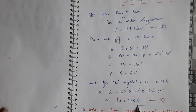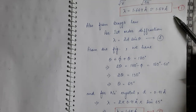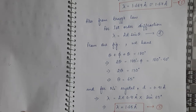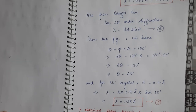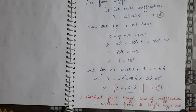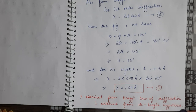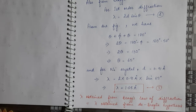From equation 1, lambda is 1.67 angstrom, and from equation 3 via Bragg's law it is 1.65 angstrom. Approximately both wavelengths are equal. This means the wavelength obtained from Bragg's law of diffraction and the wavelength obtained from de Broglie's hypothesis are equal. In this way, Davisson and Germer successfully proved the existence of de Broglie waves associated with material particles, and experimentally verified that the electron has wave character during its motion.